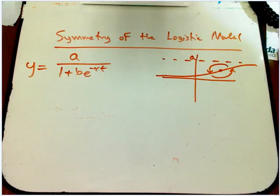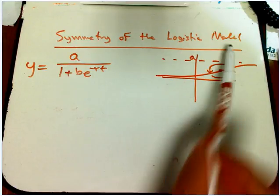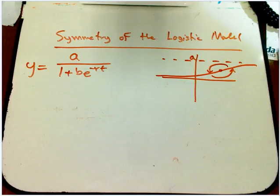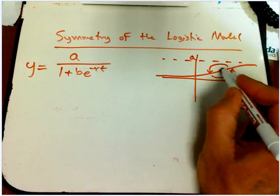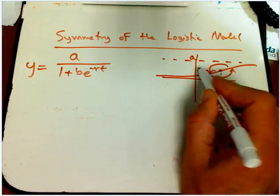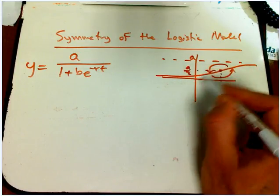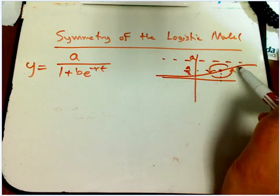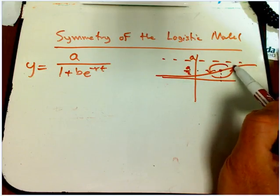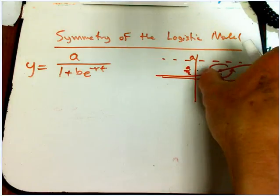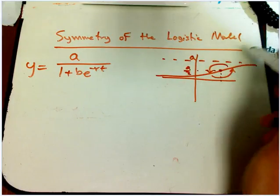Finishing up what I want to say in general about the logistic model, let me show the symmetry, and I'm going to show it in a special case. So in general, there's this halfway point where it gets up to a over 2, and it certainly appears, and it is true, that it's 180 degrees rotationally symmetric about that point.